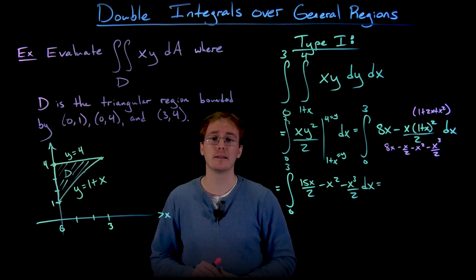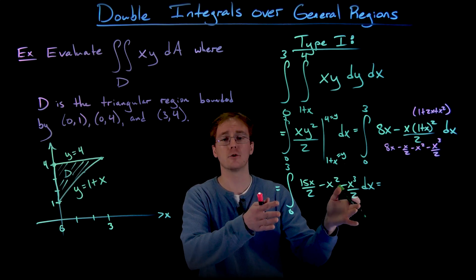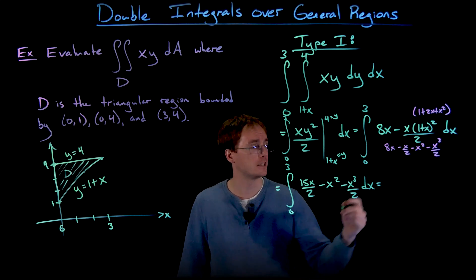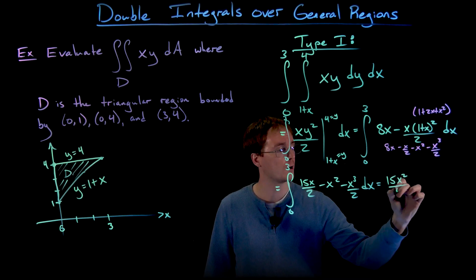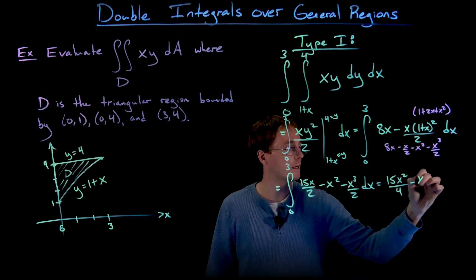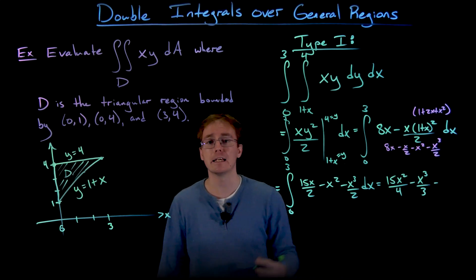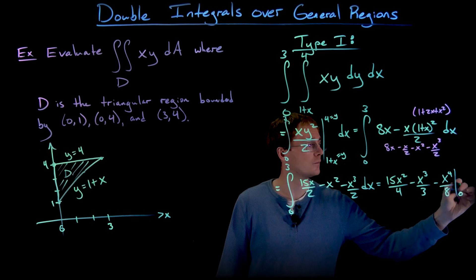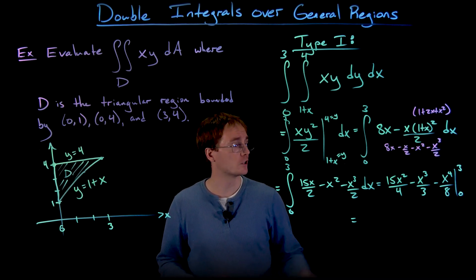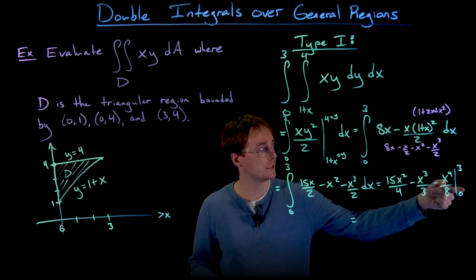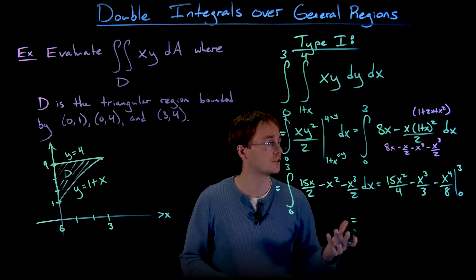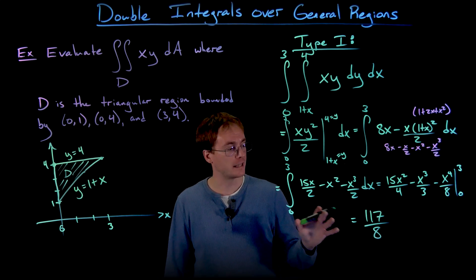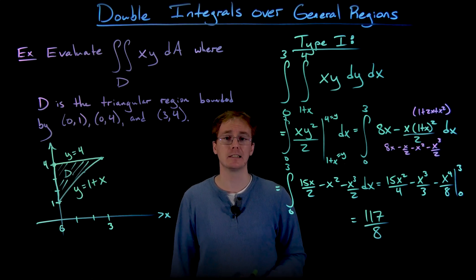We've finished evaluating the inner integral with respect to y, leaving an integral with respect to x only. The antiderivative of 15x/2 is 15x squared over 4; the antiderivative of negative x squared is negative x cubed over 3; and the antiderivative of negative x cubed over 2 is negative x to the 4th over 8. Evaluating at x equals 3 (the lower limit of 0 eliminates those terms), we get a value of 117 over 8.